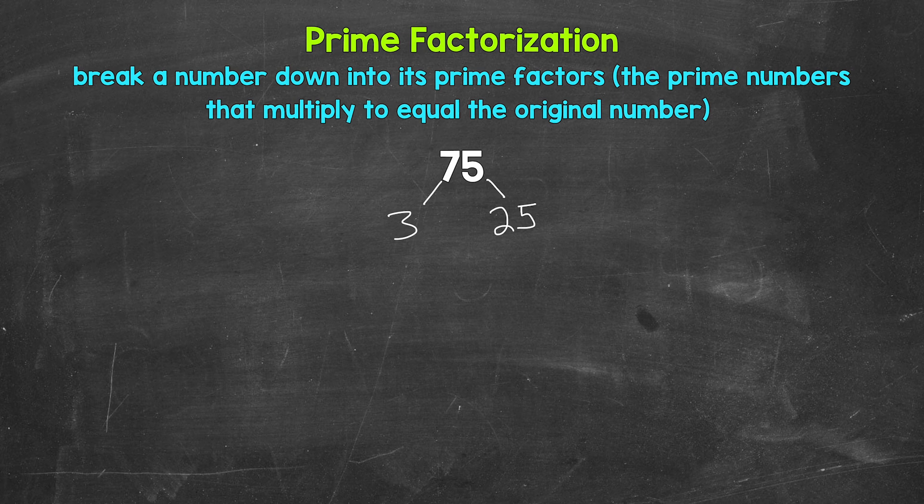Now let's continue breaking this down. We have three and 25. Now three is a prime number, so we are done here. We can't break that down any further. So let's circle three to show that we have a prime number.